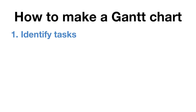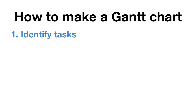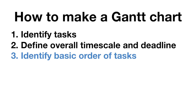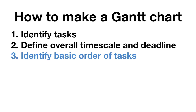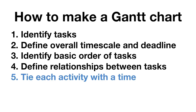Step one is to identify the tasks for your project. Step two, you define your overall time scale and deadlines. Step three, you identify the basic order of tasks. Step four is defining the relationships between those tasks. And step five is to tie each activity with the time.